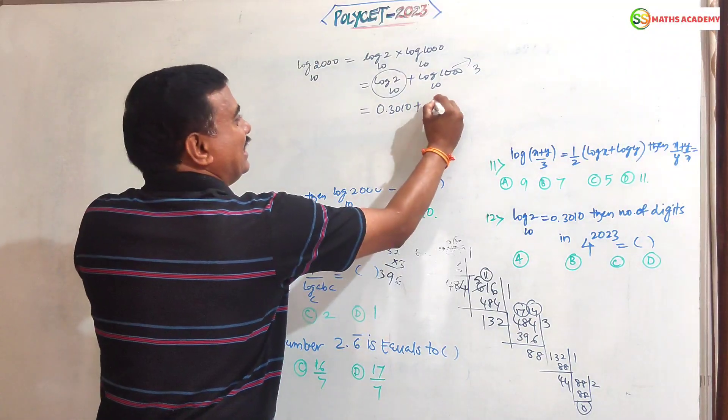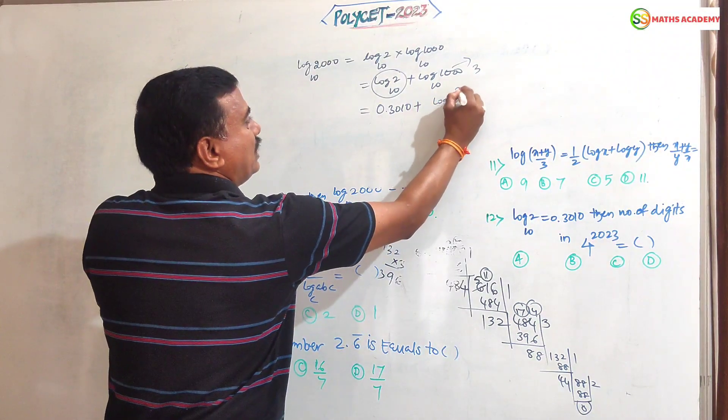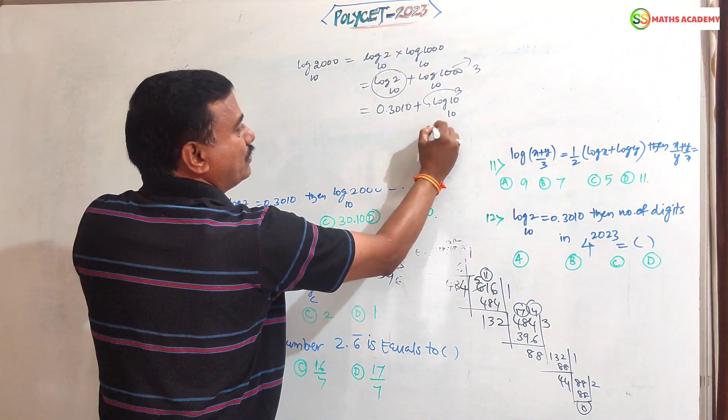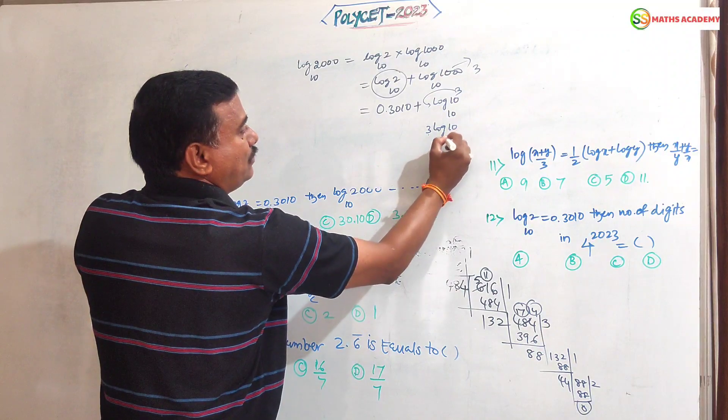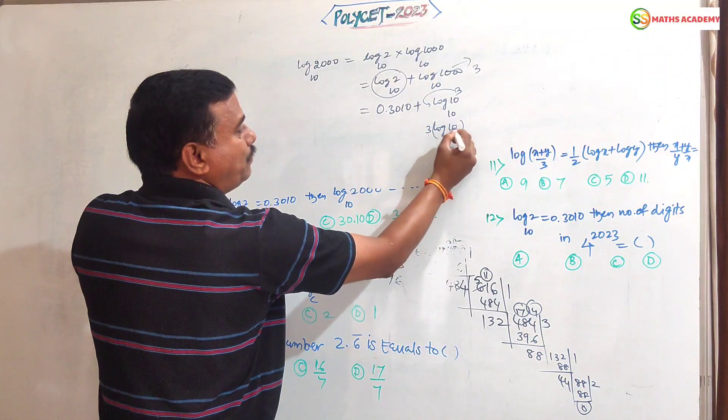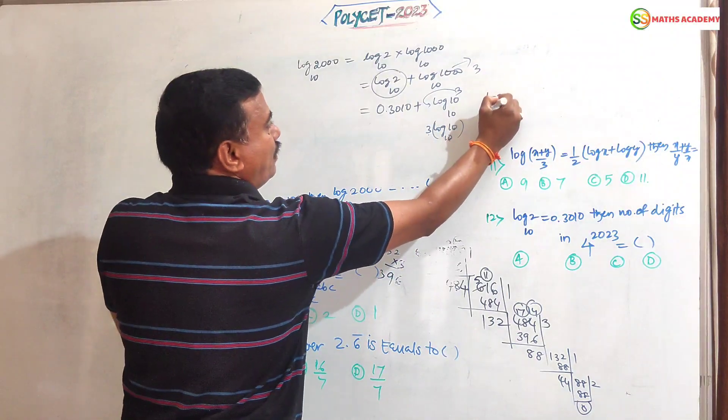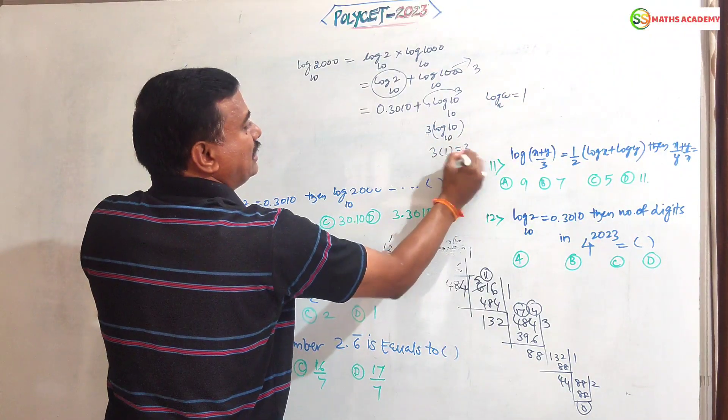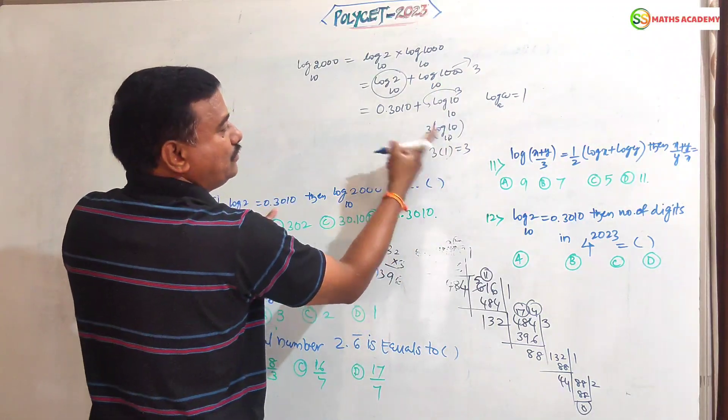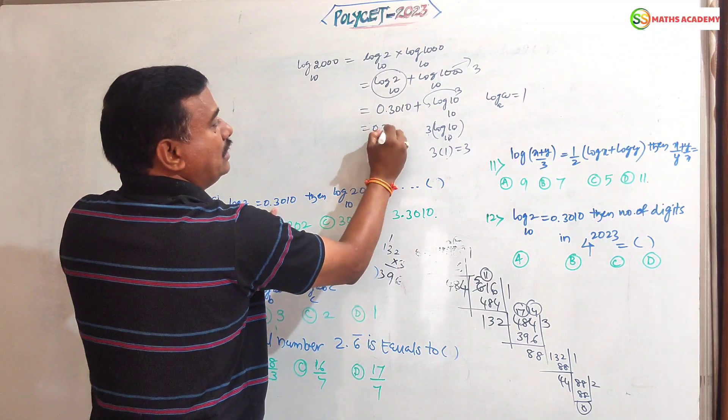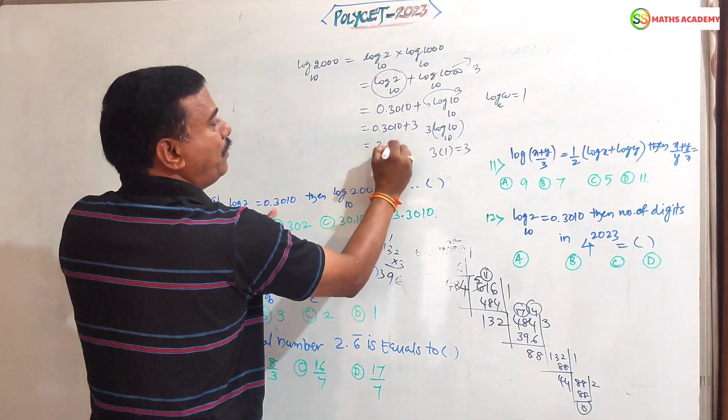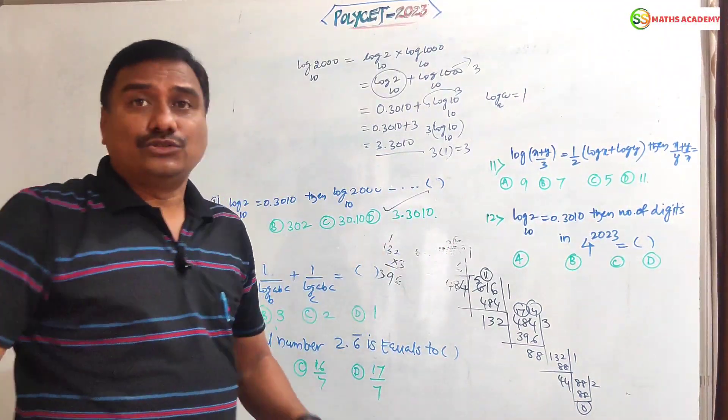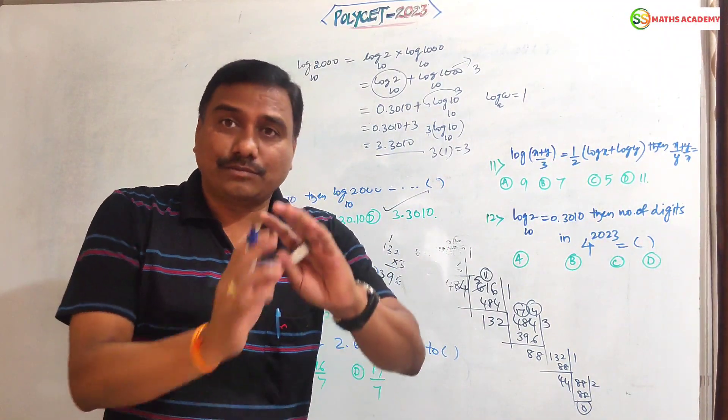How is it? Let us see. Log 1000, 1000 in exponent form is 10 cube to the base 10. Power will come before: 3 into log 10 to the base 10. When argument and base are same, this value should be 1. As per formula log A to the base A equals 1. So 3 into 1 is 3. Now this value we should add. 0.30 plus 3, nothing but 3.3010. This is the answer.